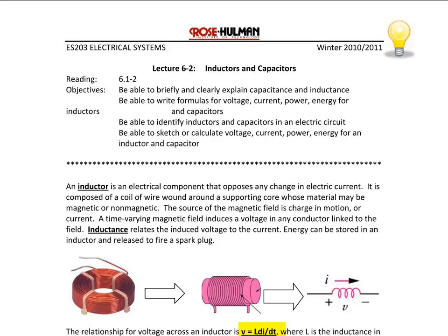An important thing to remember is that once we introduce inductors and capacitors into a circuit, there is no longer a linear relationship between voltage and current — there is actually a derivative. Looking at three examples of an inductor here: each is a coil of wire wound around some type of core, and when current flows through that core it induces a voltage. The circuit element on the right is the one we will use in class to represent an inductor.